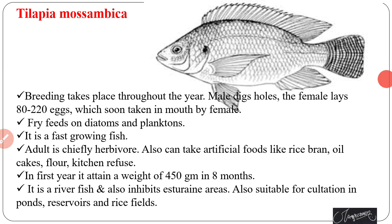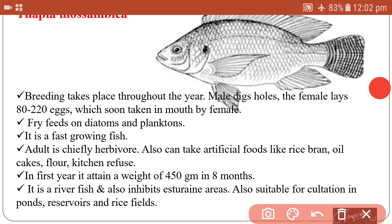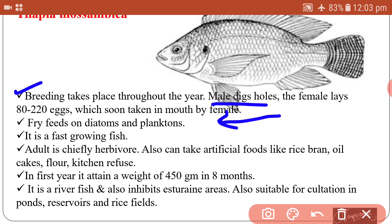Breeding takes place throughout the year. Males dig holes and the female lays 80 to 220 eggs in them, which are then taken into the female's mouth for carrying and brooding. Fry feed on diatoms and planktons.